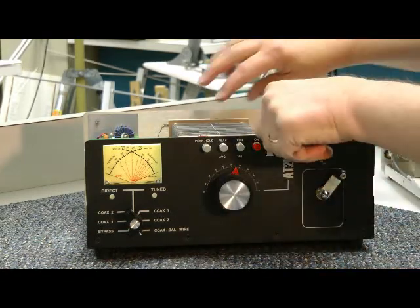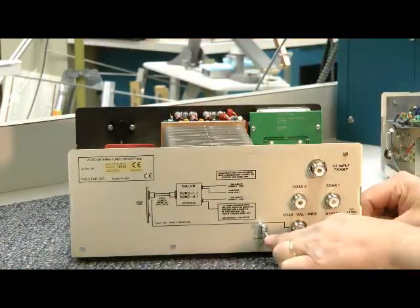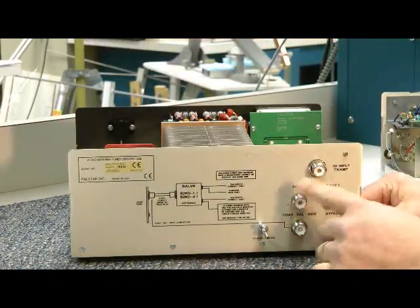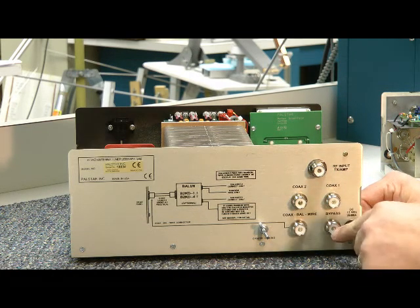Let's take a look at the back side. We'll spin it right around. And here we have the antenna post, coaxial input from your transmitter, and the various outputs here, even a bypass.